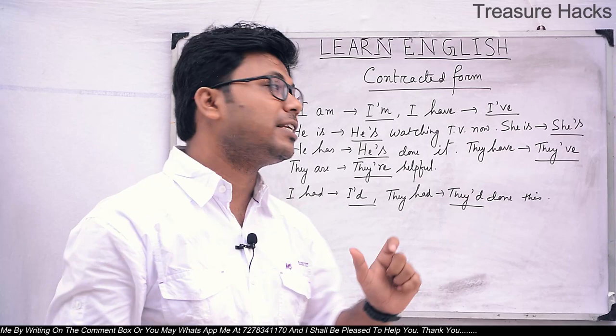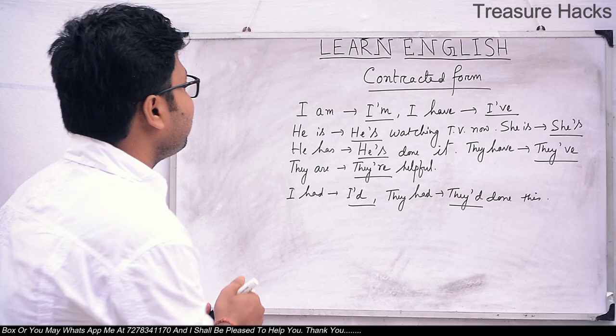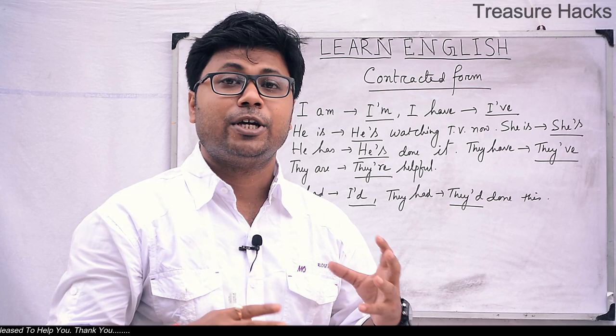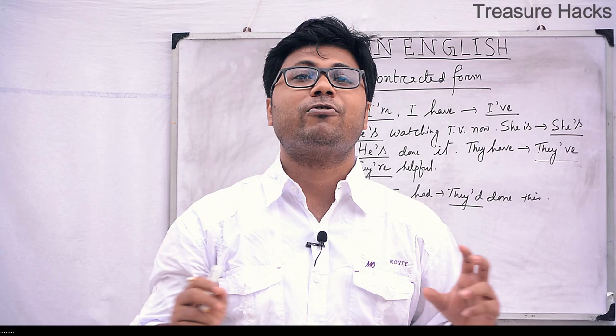Now we'll talk about pronoun-based contractions. 'I am' in contracted form is written as I apostrophe M — 'I'm'. For example, when someone asks 'How are you?' instead of saying 'I am fine', in contracted form we say 'I'm fine'.